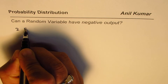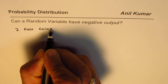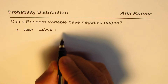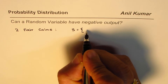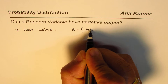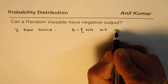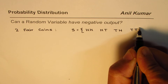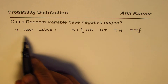Let us consider two fair coins. If you toss these fair coins, what is the sample space? We could get two heads, we could get head and a tail, we could get tail and head, or we could get two tails. These are the possible outcomes when you perform this experiment.